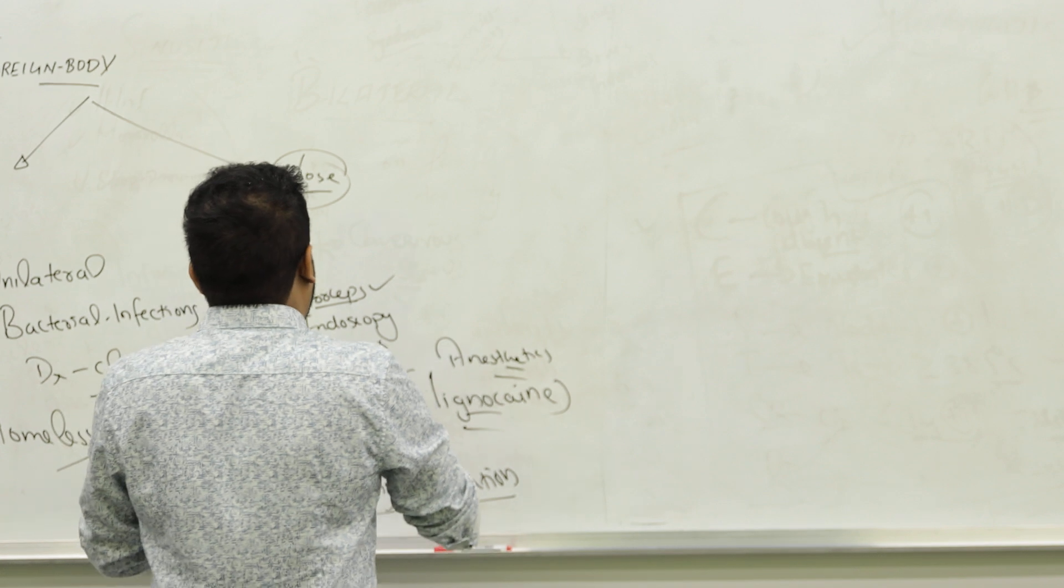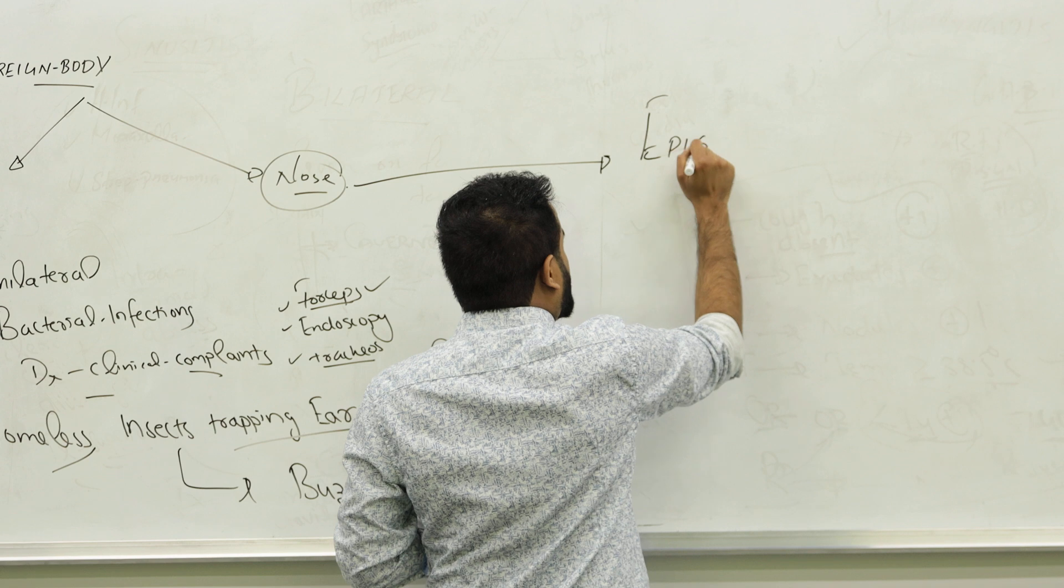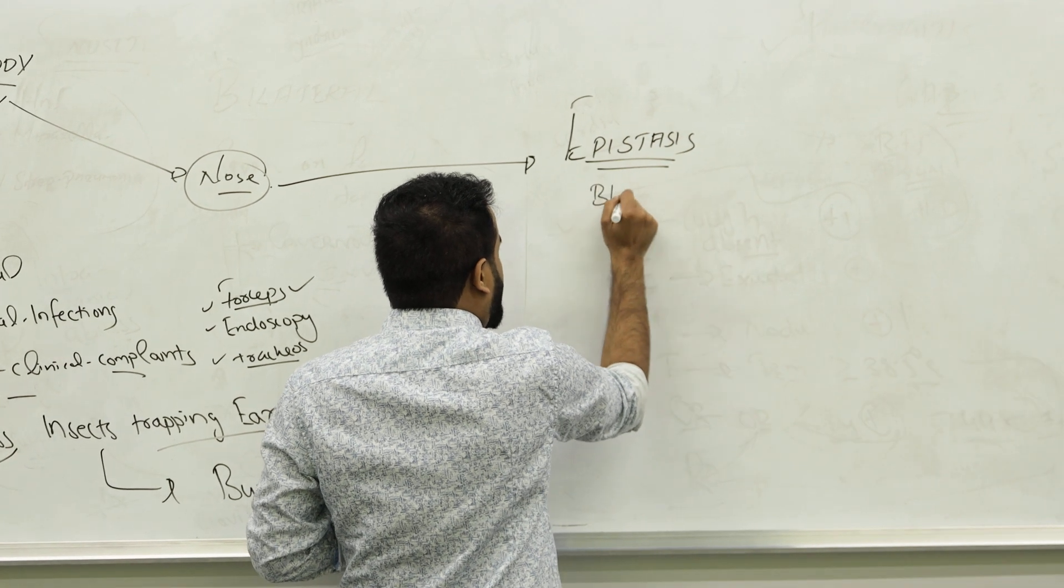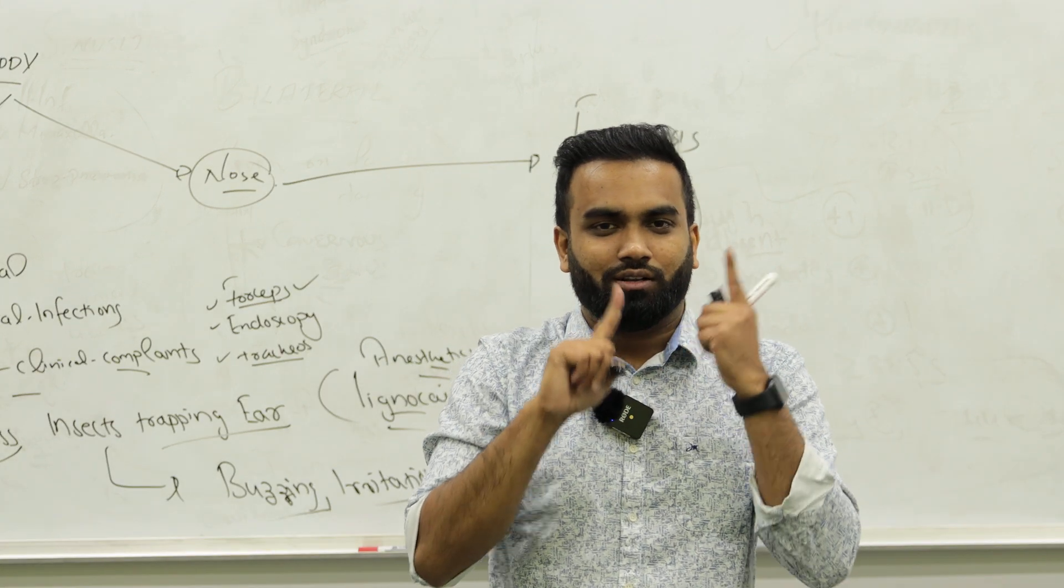In the nose. You know the main problem in the nose. We are talking about epistaxis. It is bleeding from the nose. There will be bleeding. Normally in child and old, they will keep always their fingers in the nose. Again unilateral.